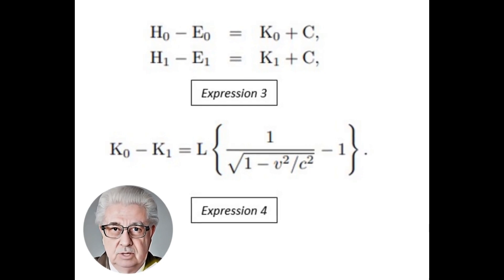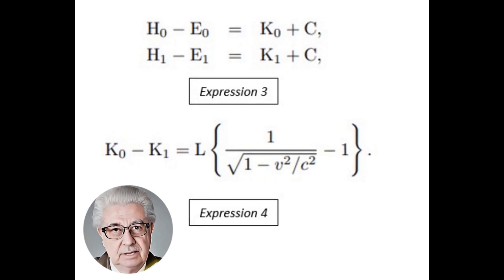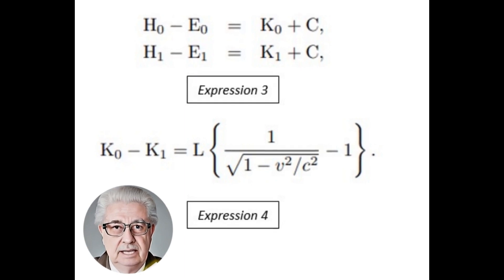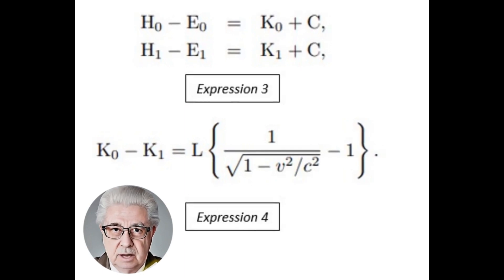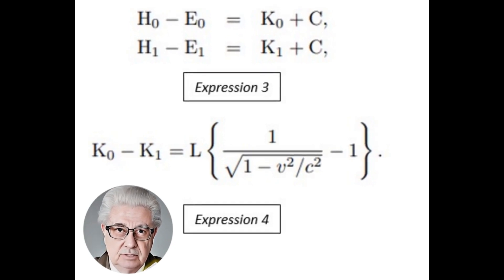The kinetic energy of the body with respect to the reference system at rest decreases as a result of the emission of light, and the decreased amount is independent of the properties of the body. In addition, the kinetic energy difference K0 minus K1, like the kinetic energy of the electron, depends on the velocity.